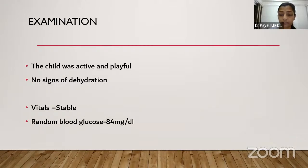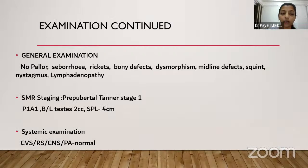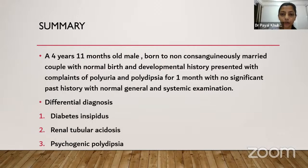On examination the child was active and playful, no signs of dehydration, vitals stable, random blood sugar 84 mg/dL. Anthropometry was normal. No pallor, rickets, bony defects, dysmorphism, midline defects, squint, nystagmus, or lymphadenopathy. SMR staging was prepubertal Tanner stage one. Systemic examination was normal. Differential diagnosis after examination includes diabetes insipidus, renal tubular acidosis, and psychogenic polydipsia.